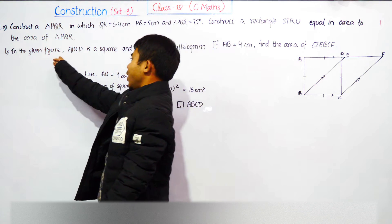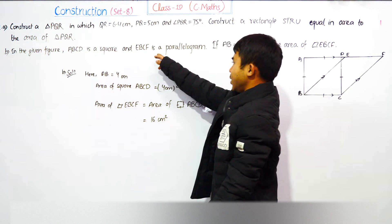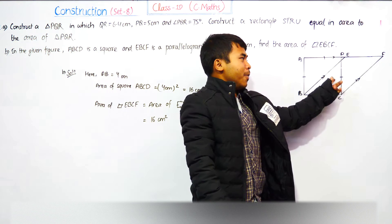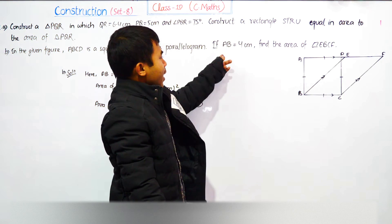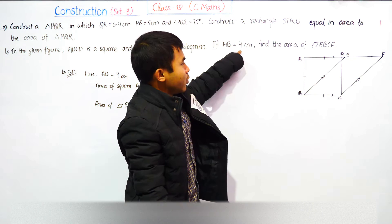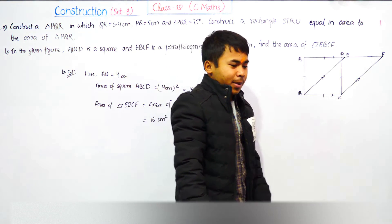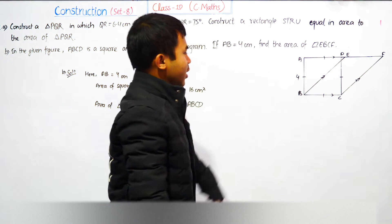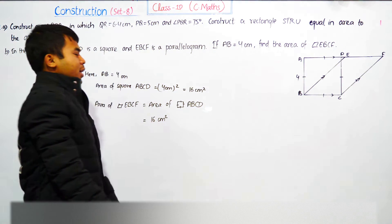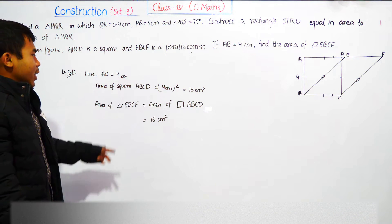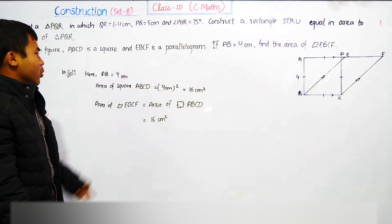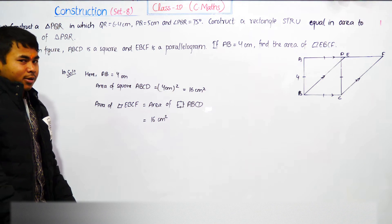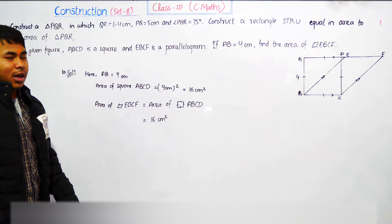Another question: in the given figure, ABCD is a square and ABCF is a parallelogram. AB's length is given as 4 cm. Find the area of parallelogram EBCF. AB's length is 4 cm, so the area of the square will be 4 cm squared, which equals 16 cm square, because area of a square is length squared.